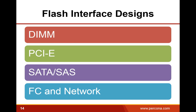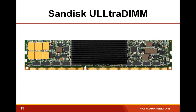When it comes to flash interfaces, there are a number of ways they can be accessed in your system: DIMM slots, PCI Express devices, SATA and SAS drives, and also flash accessible through fiber channel or network, such as a flash-based SAN. Let me show you some common examples.